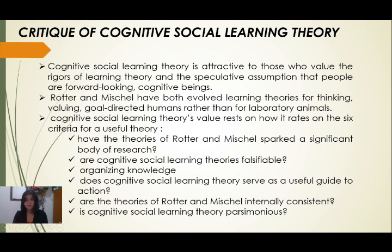The second criterion asks: are cognitive social learning theories falsifiable — can the research be proven wrong? The third criterion concerns organizing knowledge. The fourth asks: does cognitive social learning theory serve as a useful guide to action? The fifth criterion asks: are the theories of Rotter and Mischel internally consistent — meaning not contradictory, not confusing, and well-organized? The sixth criterion asks: is cognitive social learning theory parsimonious — meaning economical in its assumptions?